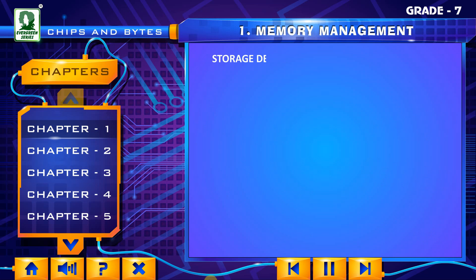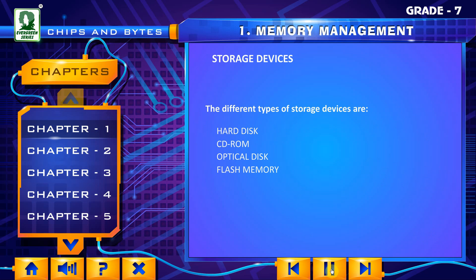The different types of storage devices are: Hard disk, CD-ROM, Optical disk, Flash memory, USB drive, Removable hard drive, Smart cards, and Optical cards.